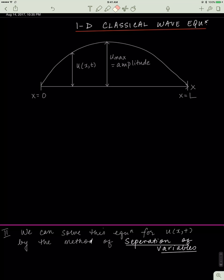In order to understand quantum mechanics and the wave nature of matter, it's pretty important that we start understanding the wave nature of matter from a classical perspective. So first let's see how classical physicists described waves, and then based on that it'll really help us understand how quantum mechanics people describe waves.